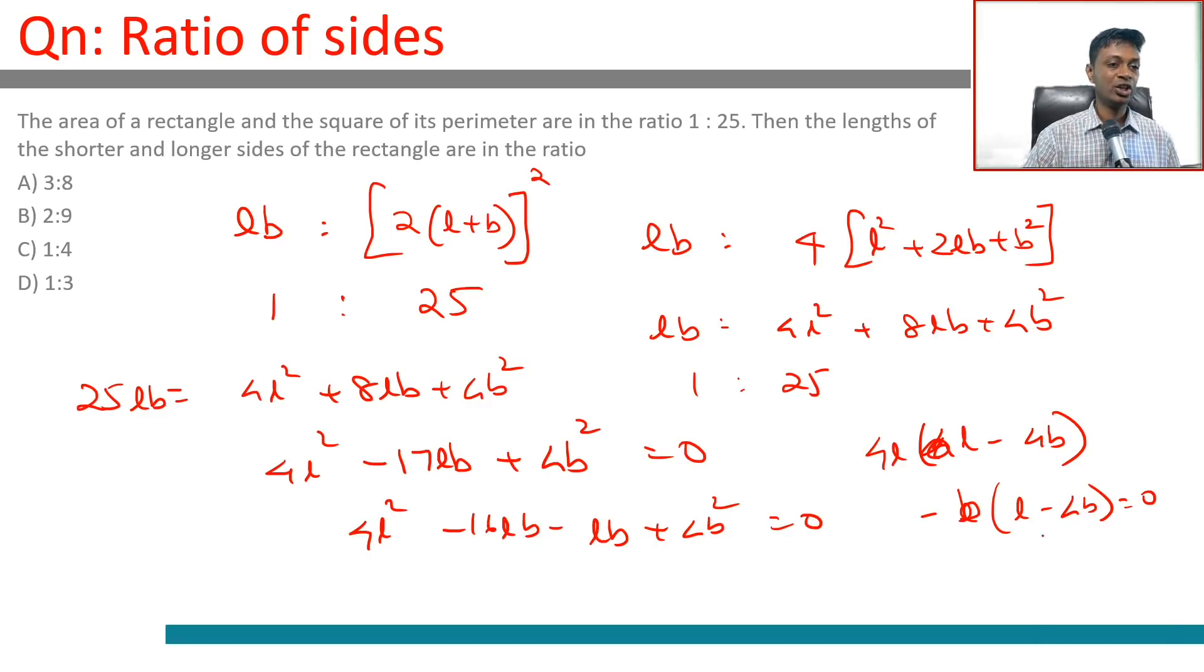1 is to 4 or 4 is to 1, shorter to longer is 1 is to 4. And just plain old-fashioned writing of equation, simplifying that.